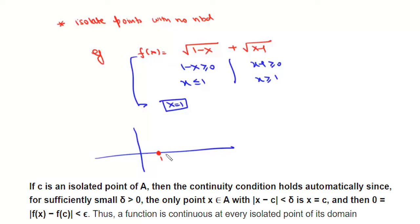And if we put x equal to 1, this value will be 0. So this is the graph of this function f(x). So for this function, its entire domain is this one isolated point.